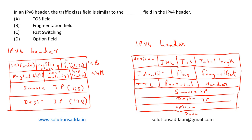The traffic class field in IPv6 indicates the priority or class of the IPv6 packet, and this is similar to the type of service (TOS) field in the IPv4 packet. It helps routers handle traffic based on the priority of the packet. If congestion occurs on the router, packets with the least priority will be discarded. So the correct answer is option A: type of service.